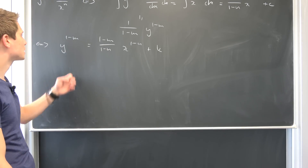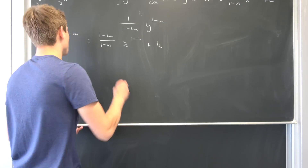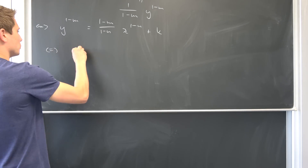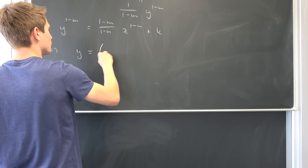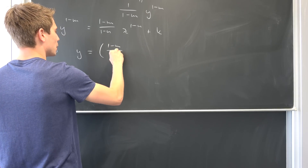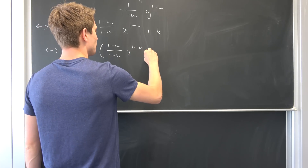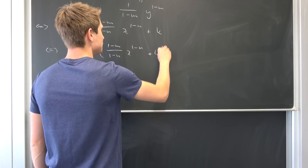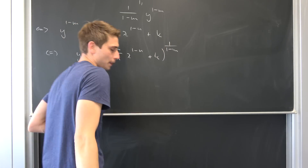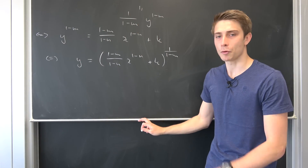Now we can raise both sides to the power of 1 over (1 minus n). So we end up with the general solution for y being equal to [(1 minus m) over (1 minus n) times x to the (1 minus n)th power plus K] to the power of 1 over (1 minus n).